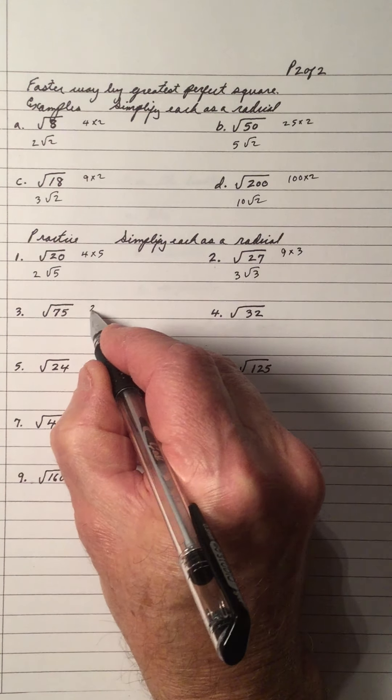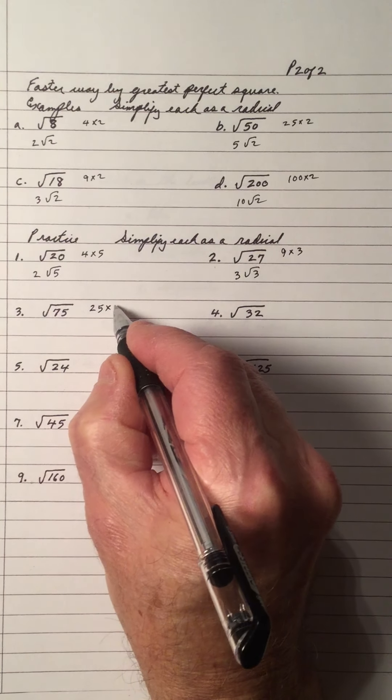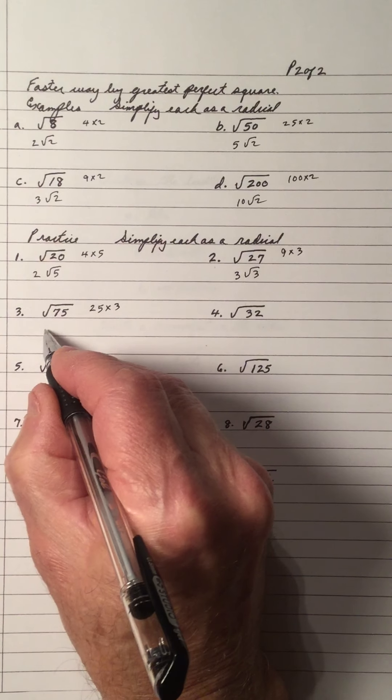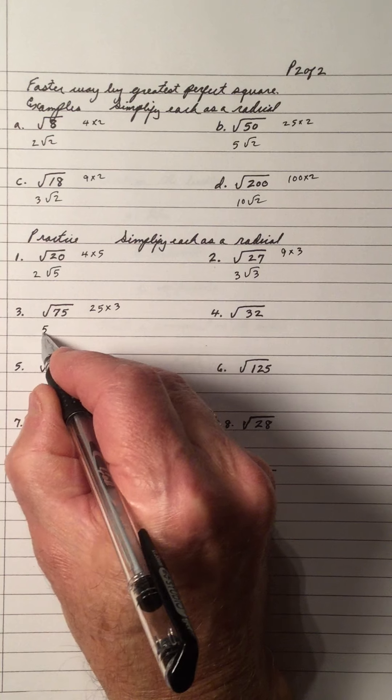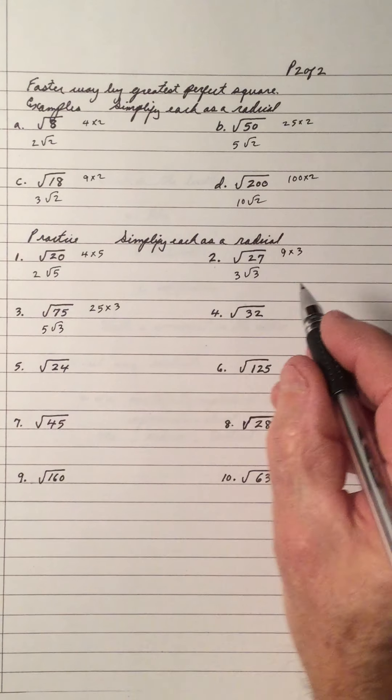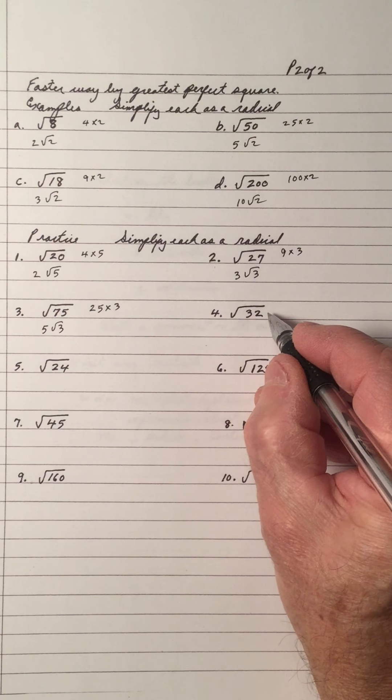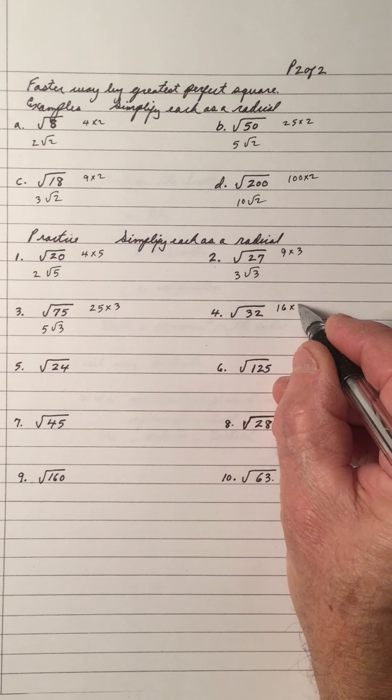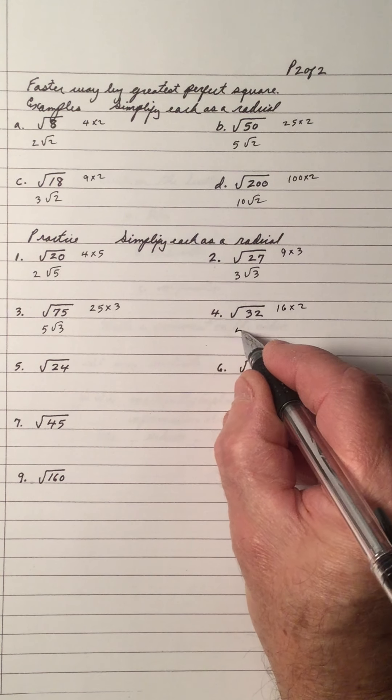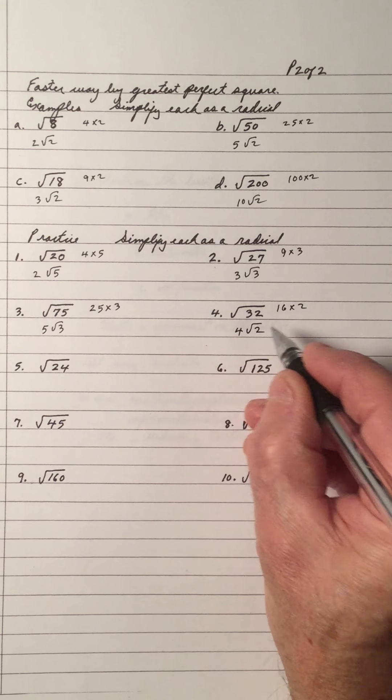75. The largest perfect square is 25. 25 times 3 is 75. The square root of 25 is 5 root 3. 32. The largest perfect square is 16 times 2. The square root of 16 is 4 root 2.